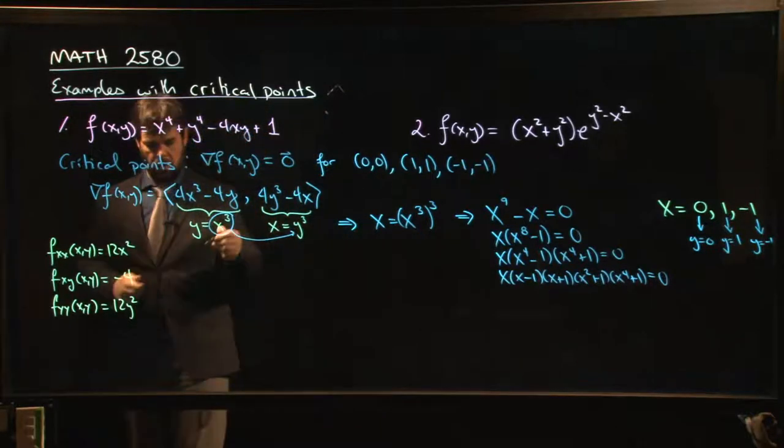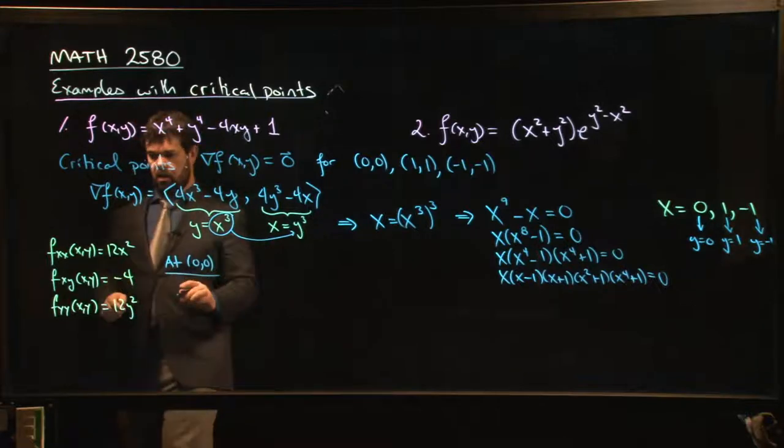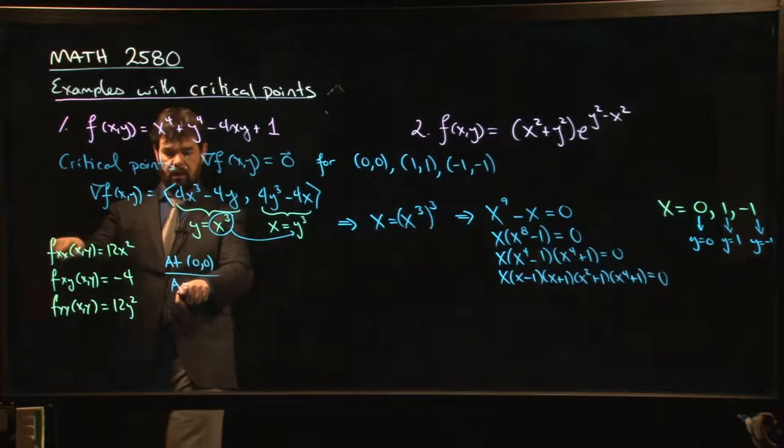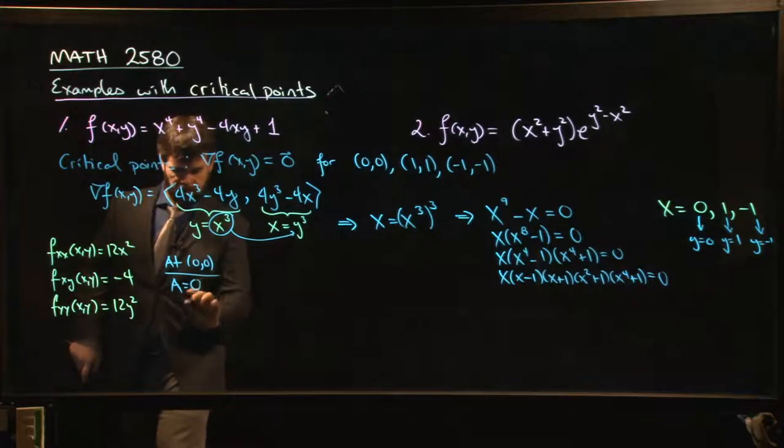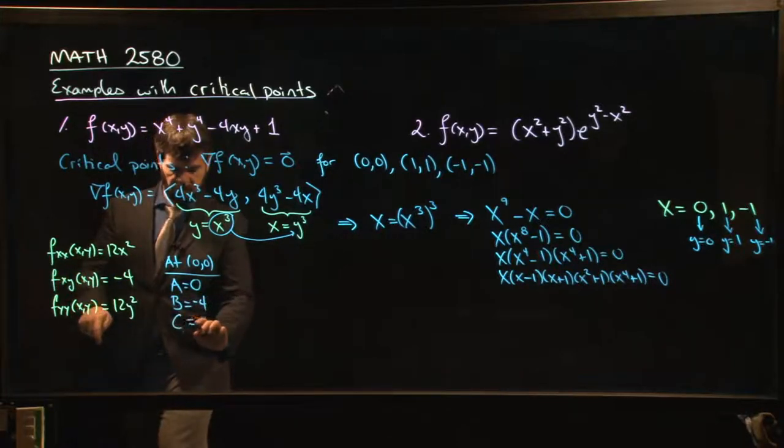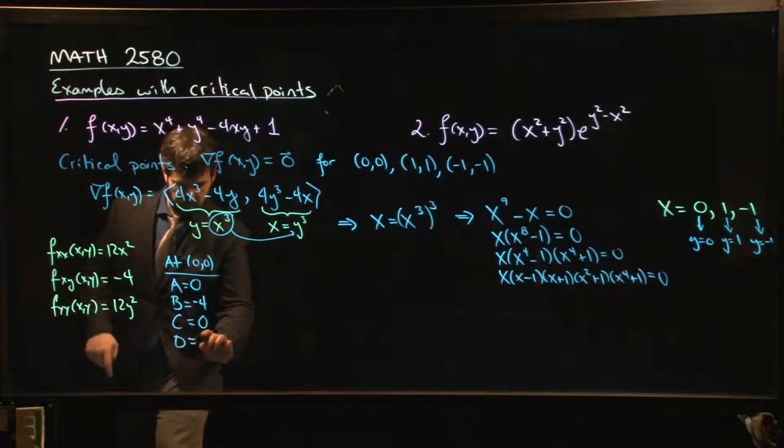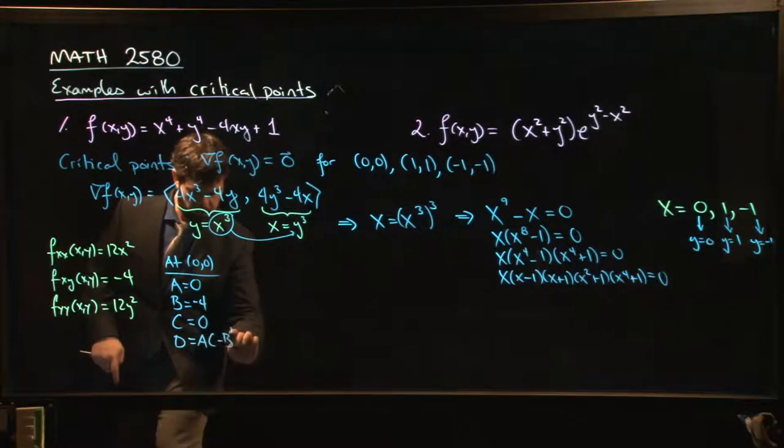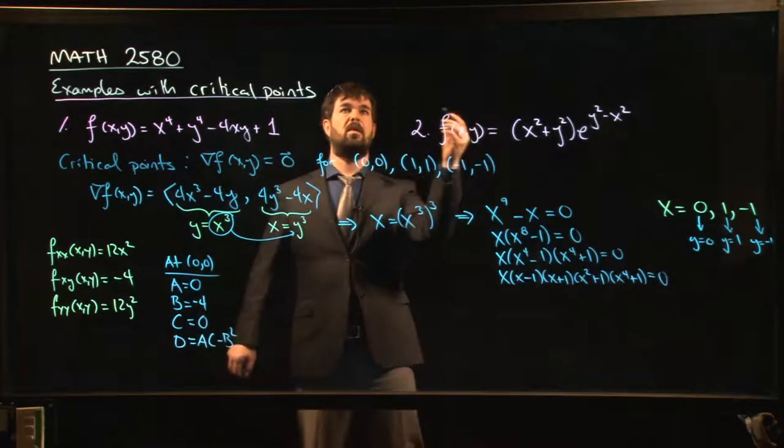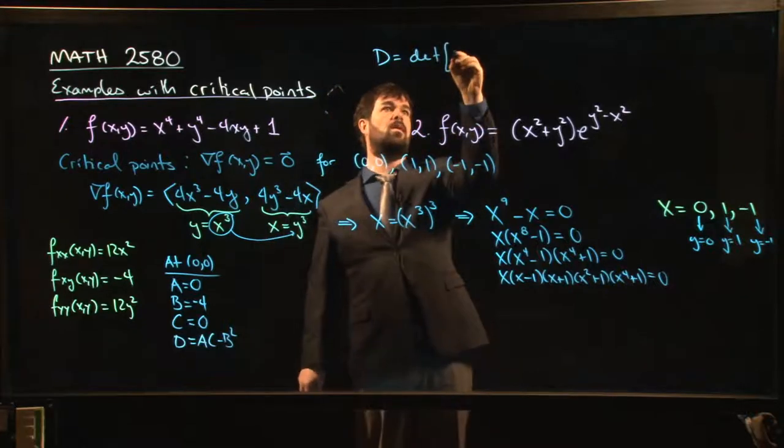Now we apply the second derivative test. We've got to calculate those a, b, c, d values, and we do them one point at a time. At the point (0,0), what do we have? Well, a - remember, a is what you get from the second derivative with respect to x. If we put x, y equals zero in there, we see that a equals zero. b is the mixed derivative, -4. c is the y derivative, zero.